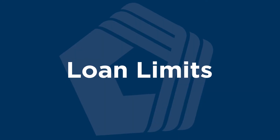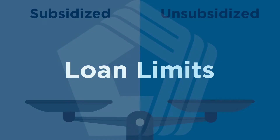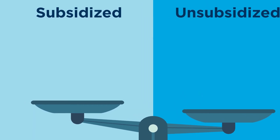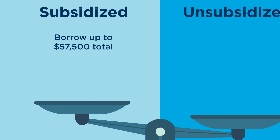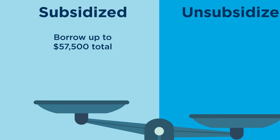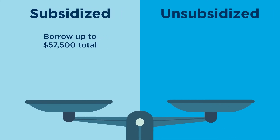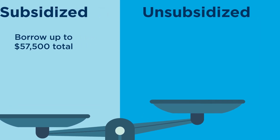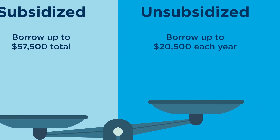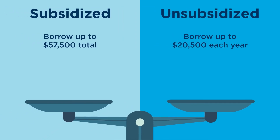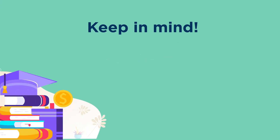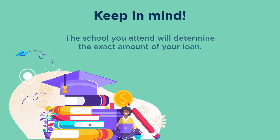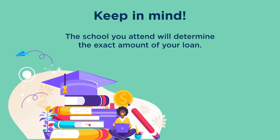The third main difference involves how much you can borrow. As an undergraduate, you can borrow up to a total of $57,500. If you're a graduate or professional student, however, you can borrow up to $20,500 each year. The school you attend will determine the exact amount of your loan.